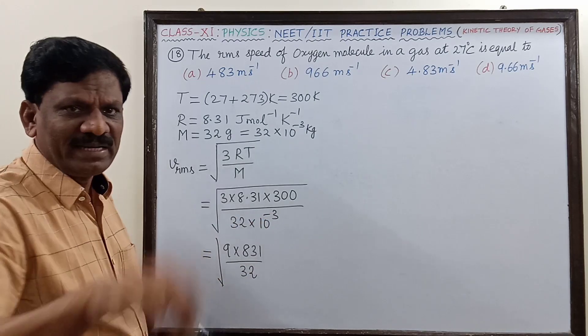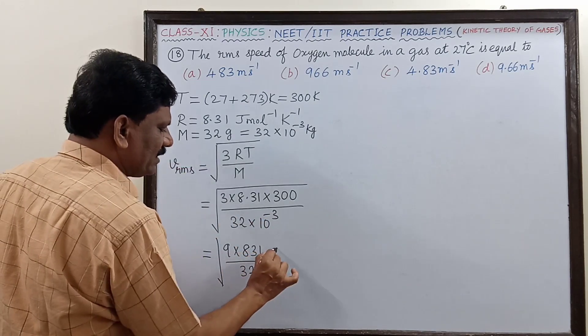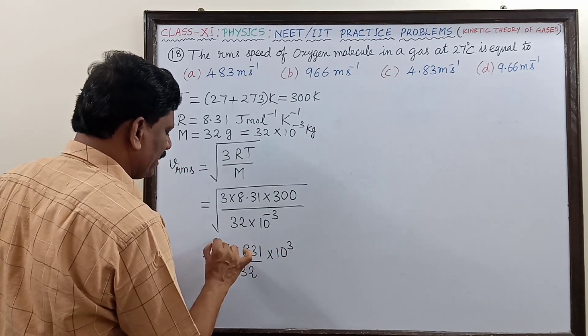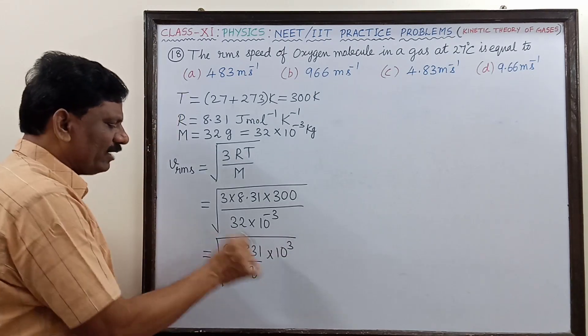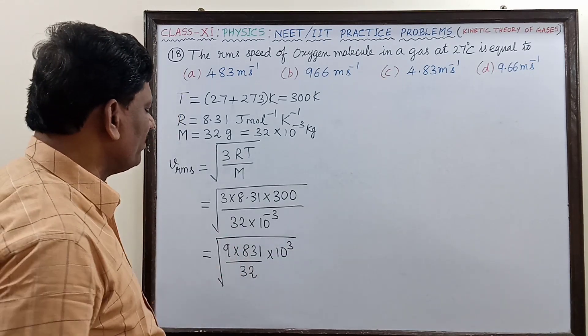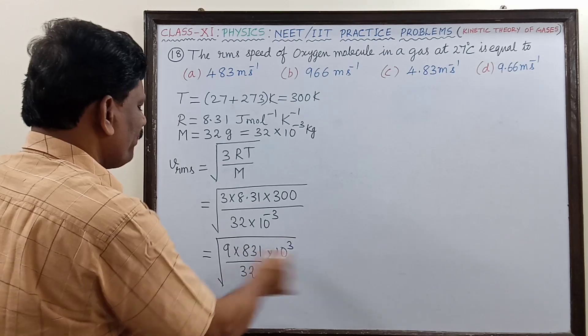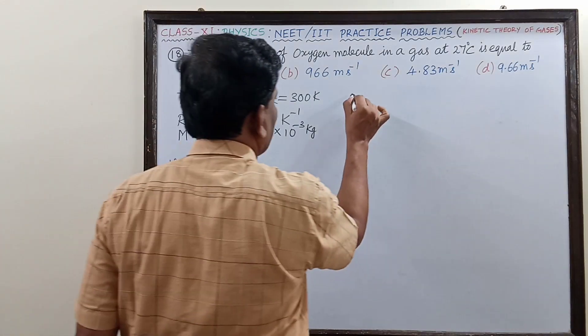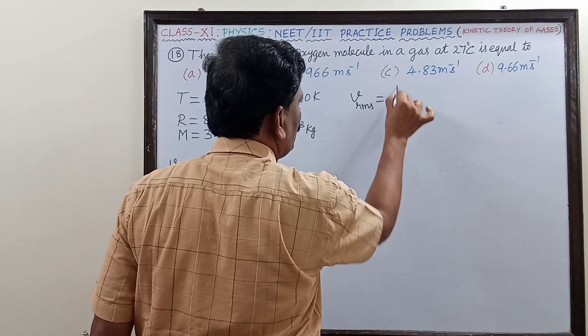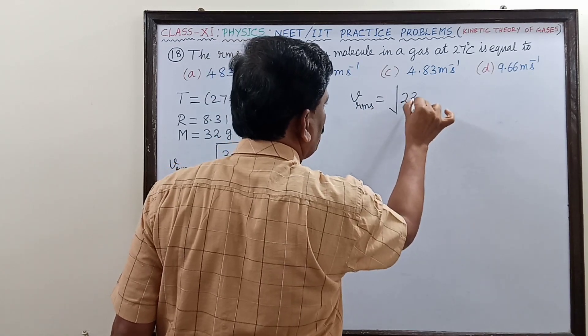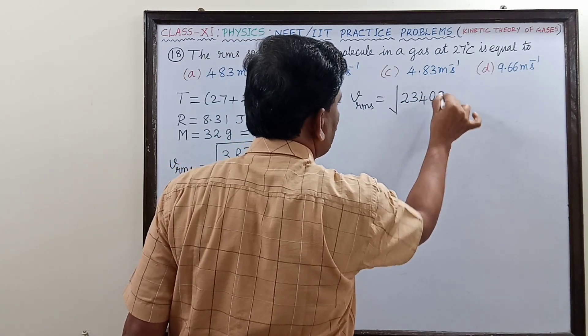What else is remaining is the denominator 10 power minus 3, which is coming up as thousand or 10 power 3. If calculator is used and you multiply this up, what will be the answer? V_RMS will be equal to square root of 234,000.